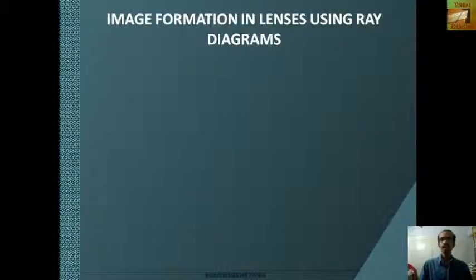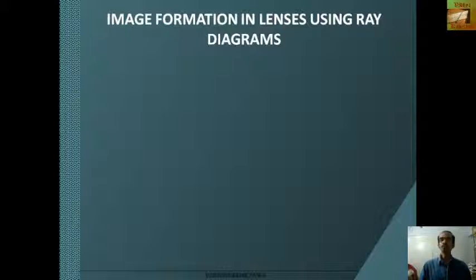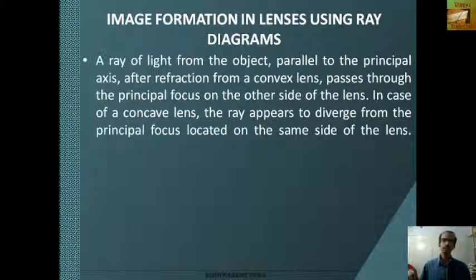We can see the image formation in lenses using ray diagrams. Some points have to be considered. The first point is: a ray of light from the object parallel to the principal axis, after refraction from a convex lens, passes through the principal focus on the other side of the lens.